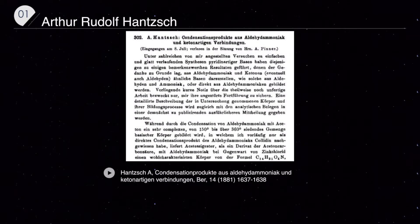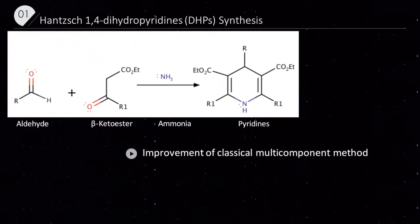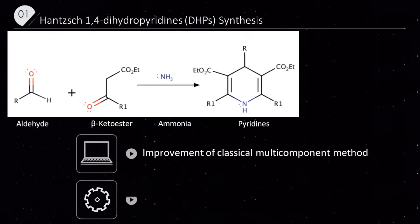Here is the total reaction of Hantzsch DHP synthesis, where condensation occurs between an aldehyde and two equivalents of beta-ketoester in the presence of ammonia. Interestingly, the reactants of this reaction were first reported as three components: acetoacetic acid, benzaldehyde, and ammonia or ammonium salts.